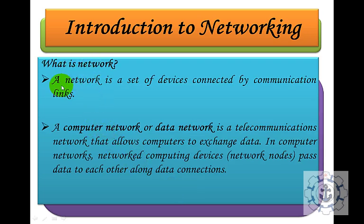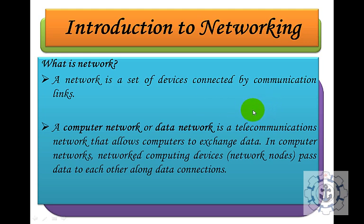So what is a network? A network is a set of devices connected by communication links. It may be a computer, a printer, or whatever it may be. They are connected by means of communication links such as cable, radio waves, or OFC — that is Optic Fiber Communication.